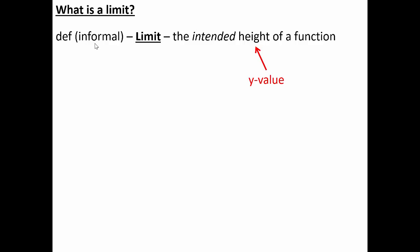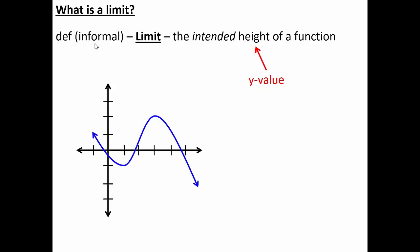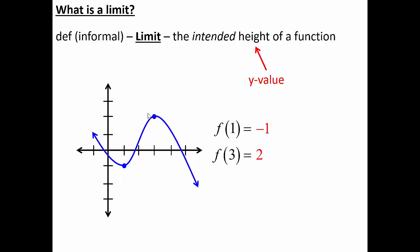Anytime I refer to the height of a function, I'm talking about the y value of any given coordinate — x is horizontal, y is vertical, and height is a vertical measurement. Looking at a graph, f(1) = -1 and f(3) = 2, since those are the y values corresponding to x = 1 and x = 3 respectively. These are the actual values of the function. But now a new question: what is the limit as x approaches 3 of f(x)? A limit asks for the intended height, not the actual height.